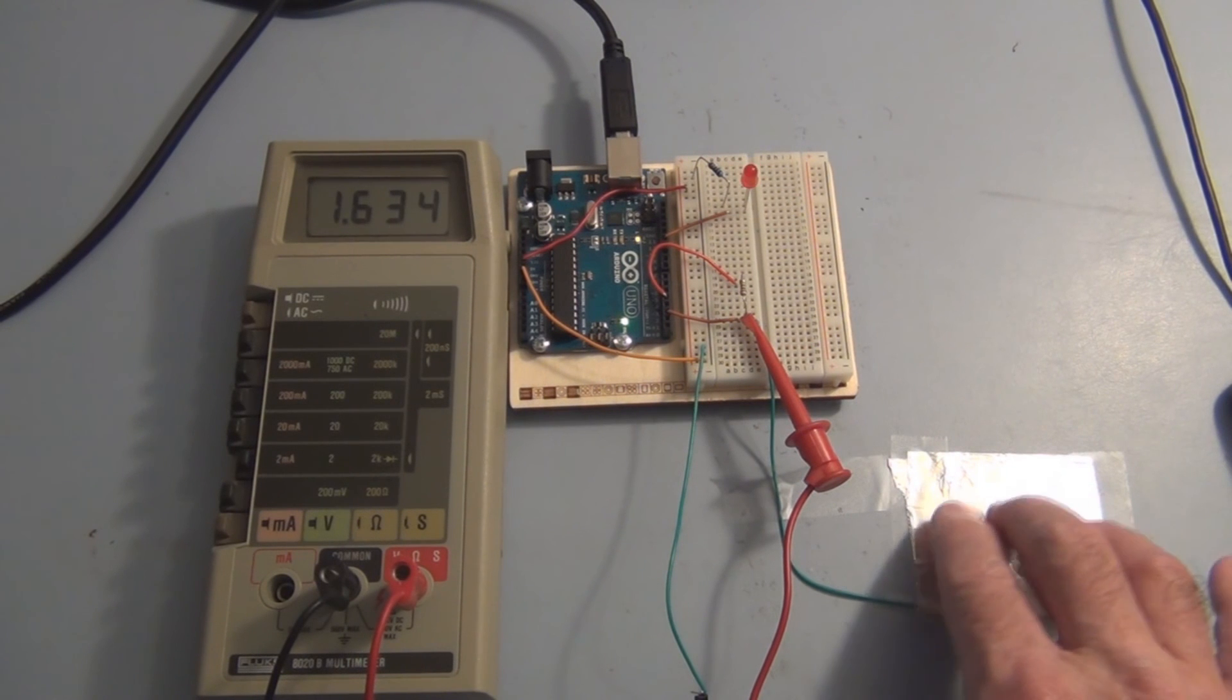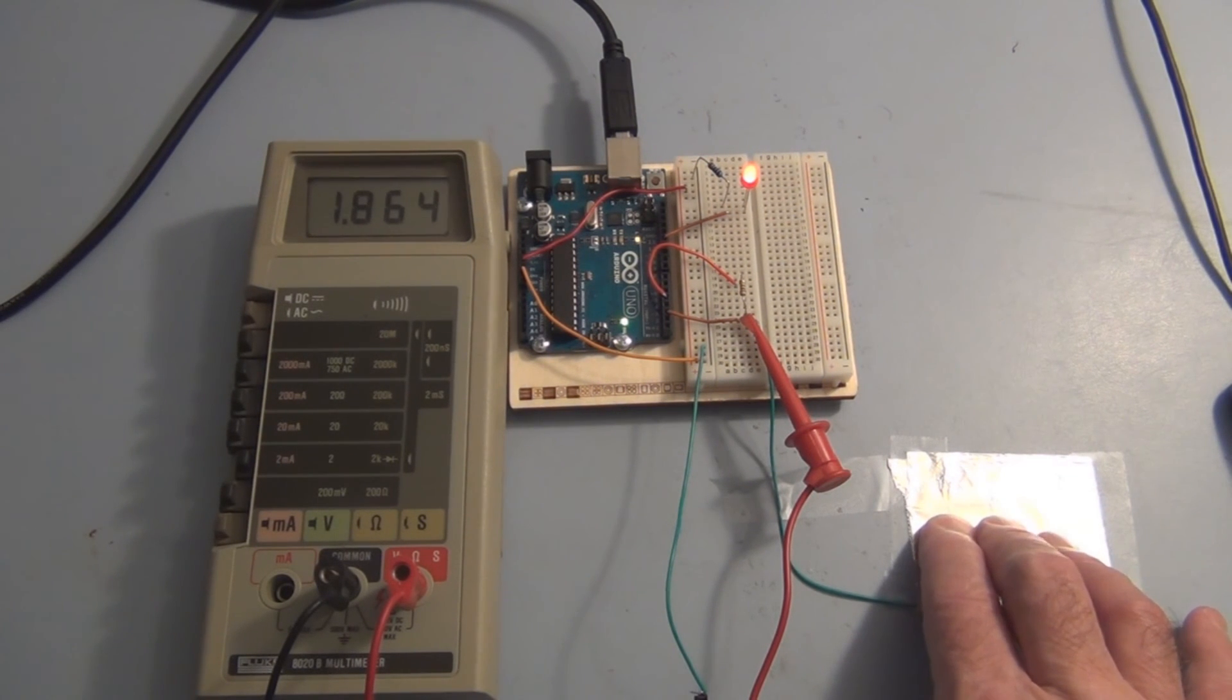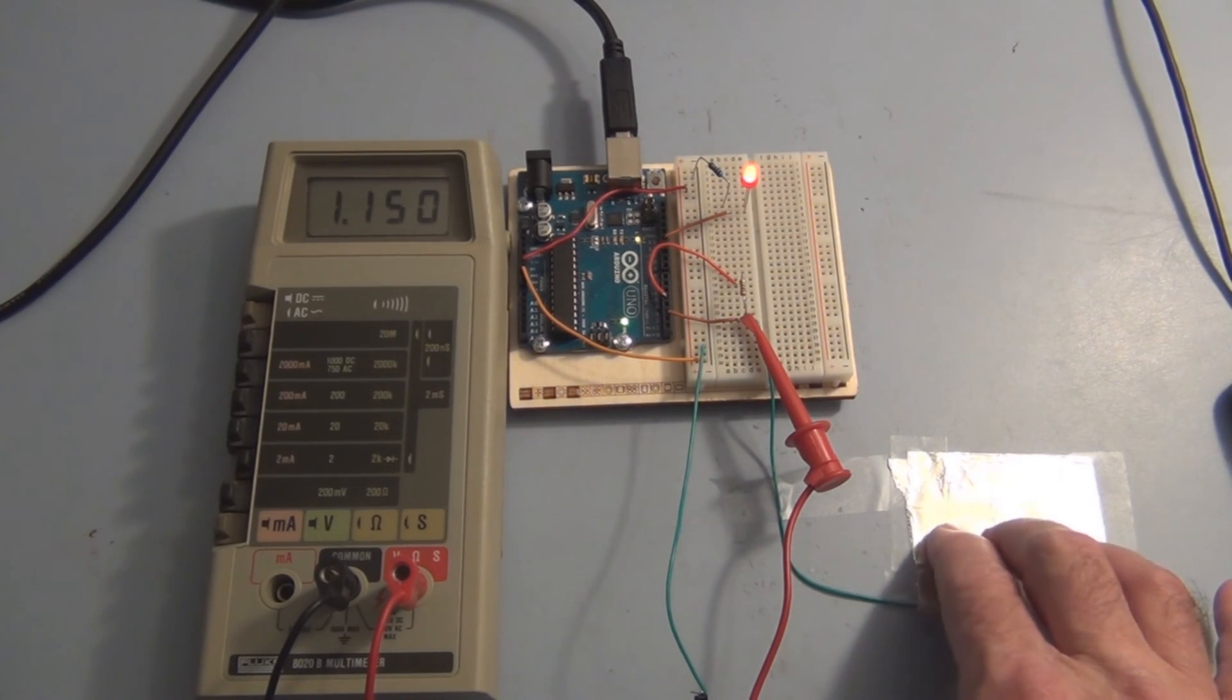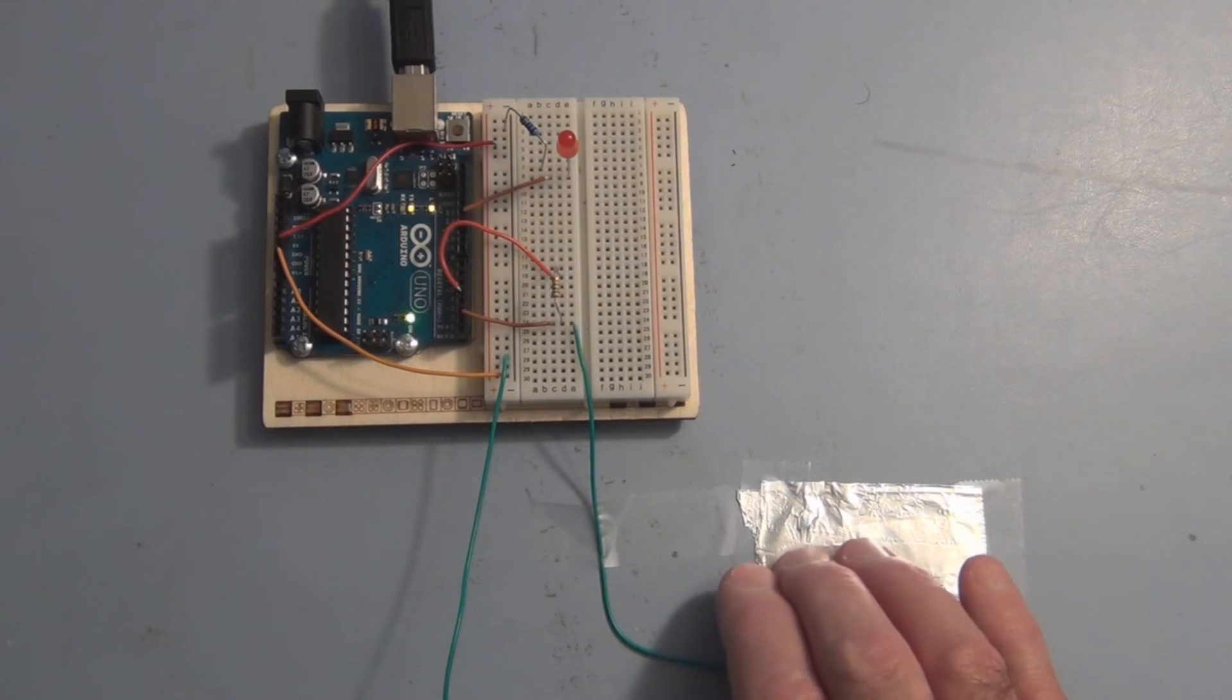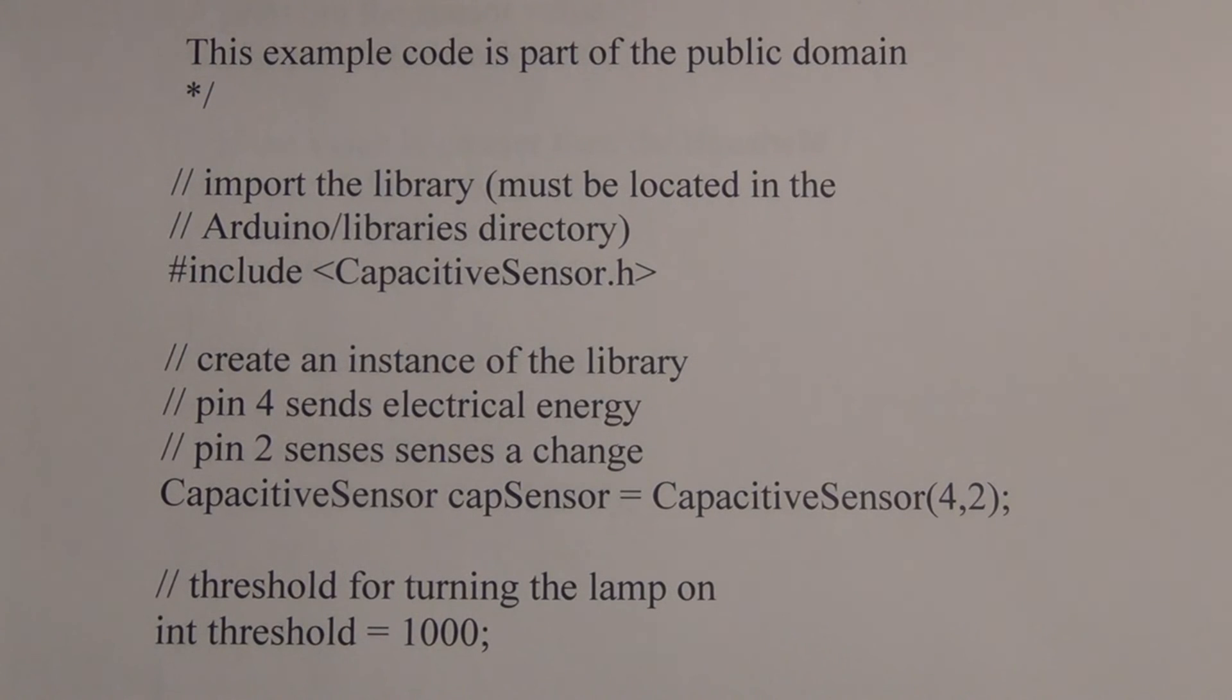So let's look at the program real quick. It's a pretty short program. You can find this capacitive sensor library on the official Arduino website. It's a zip file and you unzip it and you have to pull these files into the Arduino library in the Arduino IDE.